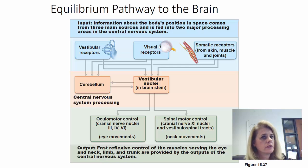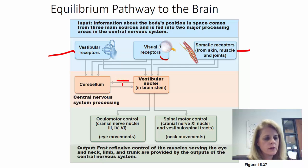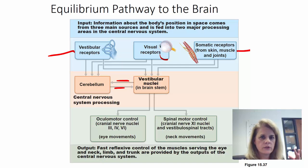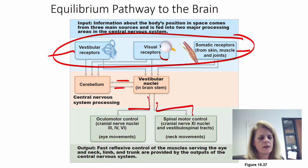It takes more than just your ears to know where you are. Processing equilibrium and orientation requires your vestibular receptors, your visual receptors, and somatic receptors — receptors in your skin, muscles, and joints. All of these come together and join with your cerebellum and vestibular nuclei in your brainstem. The output to your body includes things like stabilizing your eyes in one direction, maintaining orientation, and keeping your neck upright.